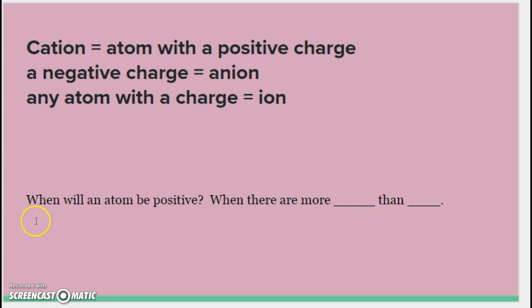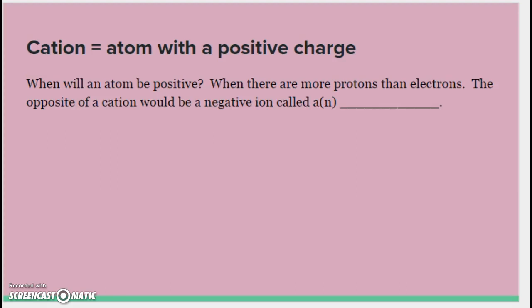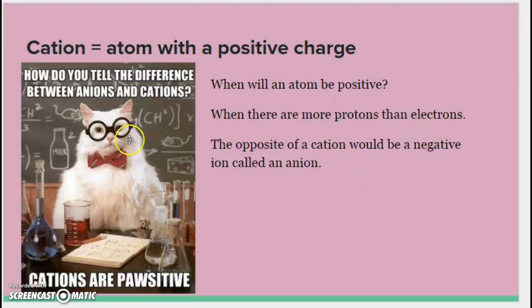Alright, so let's get back to our cations. When will an atom be positive? When there are more blank than blank. So if it's going to be positive, think about what has a positive charge, what has a negative charge. Atoms will be positive when there are more protons than electrons. The opposite of a cation would be a negative ion called an anion. How do you tell the difference between anions and cations? Cations are positive. That's right. I realize you are now laughing uncontrollably, so go ahead and hit pause until you can regain your composure.